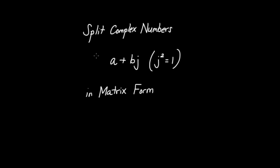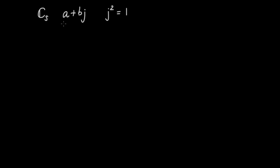I'd like to continue the celebration of linear algebra by showing you how we can write the split complex numbers, which are numbers of the form A plus Bj, where j squared is equal to 1, in matrix form. This is going to be in preparation for some neat little applications I might have for you with the split complex numbers. I have a video where I go into the split complex numbers in more detail, but let me review the major concepts.